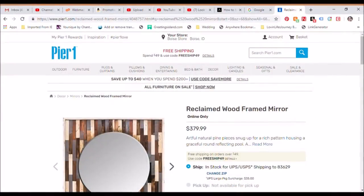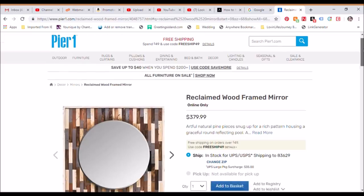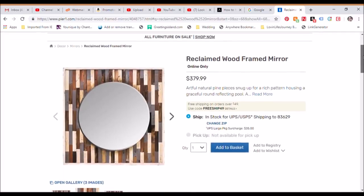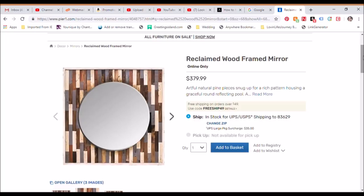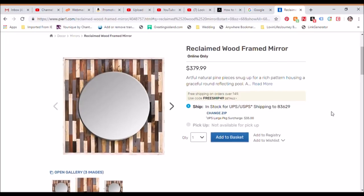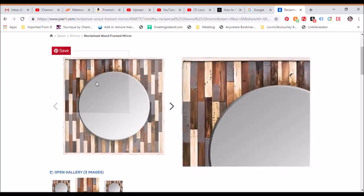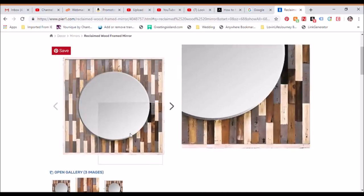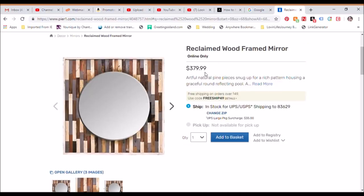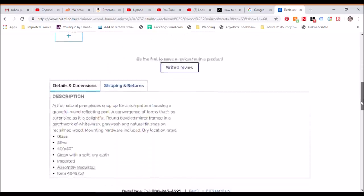My inspiration for this Look for Less Challenge was this reclaimed wood-framed mirror from Pier 1. Look at the price, $379.99. That's crazy. It's 40 by 40 inches and I can totally make this for way less. I'm going to make mine slightly smaller. Actually, I'm going to cut it in half so mine's going to be about 20 by 20, but this is my inspiration and I'm going to make this look for less.